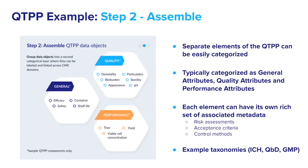In step two, we assemble this information into a coherent structure by categorizing the elements based on the language of ICH Q8 and good manufacturing practices. In this case, we are categorizing the elements of the QTPP as general attributes, quality attributes, and performance attributes. Each attribute can have its own rich set of metadata, such as risk assessments, acceptance criteria, and control methods, as prescribed by the FAIR principles discussed earlier.